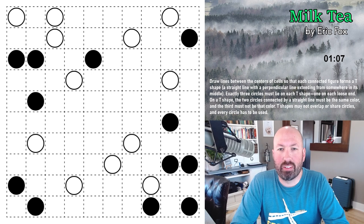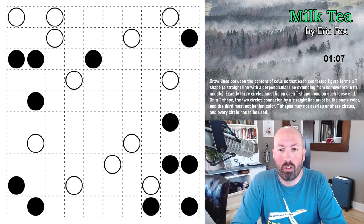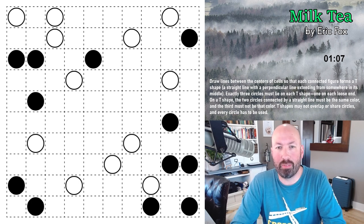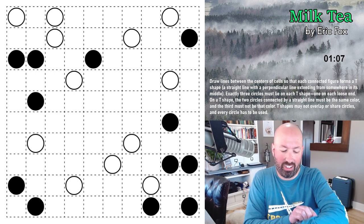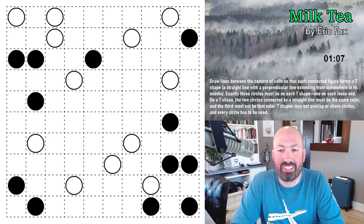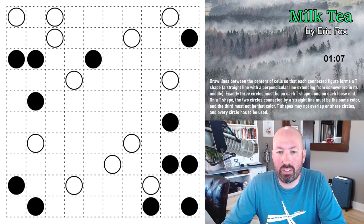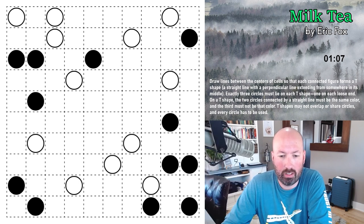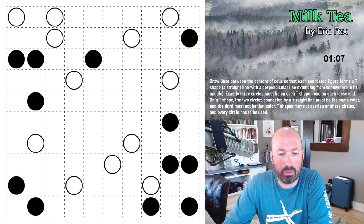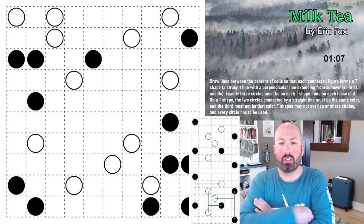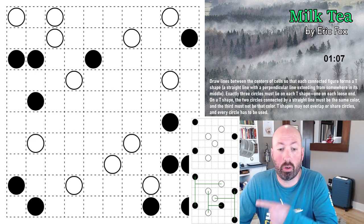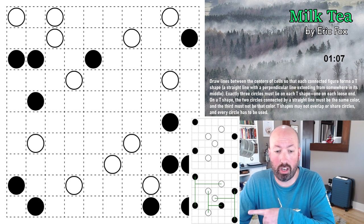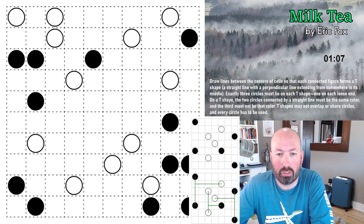Next up is a puzzle called Milk Tea by Eric Fox — another one I've never heard of. We've got a bit of a food theme: chocolate banana and now milk tea. The rules: we're drawing lines between the centers of cells so that each connected figure forms a T shape. A straight line with a perpendicular segment extending somewhere in the middle — and it doesn't have to be in the center. Exactly three circles must lie on each T shape, one on each loose end.